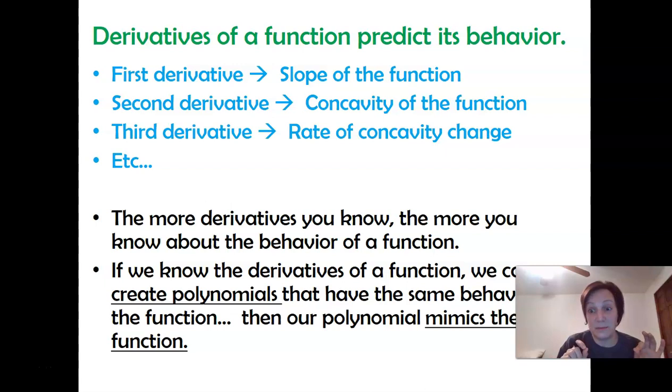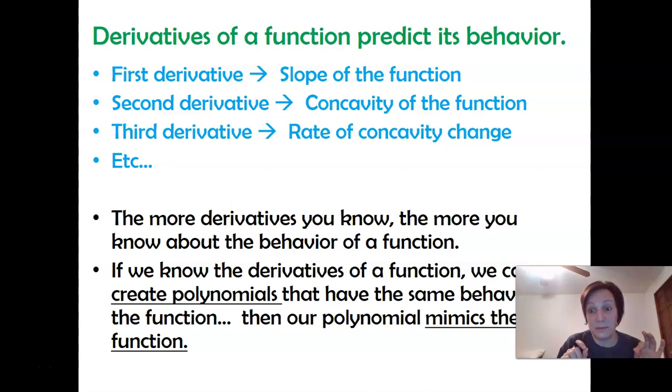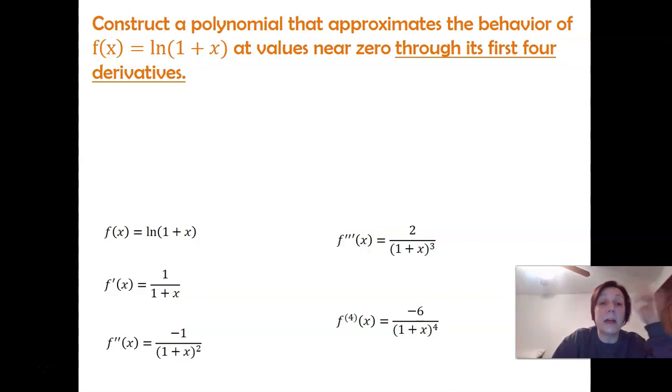And that is because the derivatives determine the behavior of a function. So like its first derivative tells us if it's increasing or decreasing. Its second derivative tells us its concavity. Its third derivative tells us the rate at which the concavity is changing. And so each derivative tells us a little bit more about the way the function curves. So if we know a function's derivatives, we can build a polynomial that matches those derivatives. And the more derivatives that we know, the better the polynomial we can build.